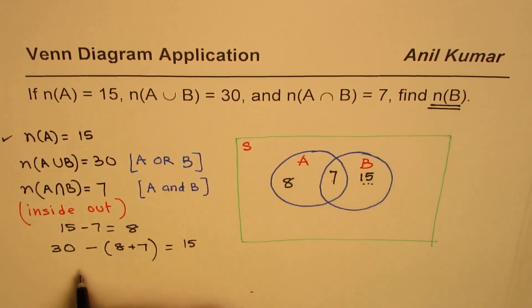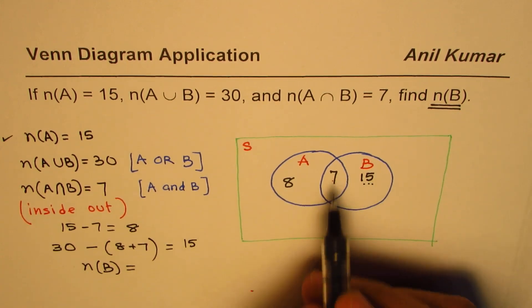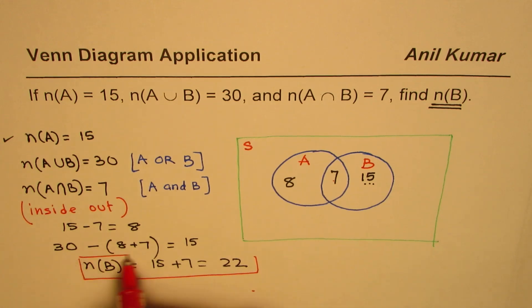Number of elements here is 15. However, total number of elements in B will be equal to 15 plus 7. 15 plus 7, which is 22. So, we have to add this common set of elements to get the number of elements in B.